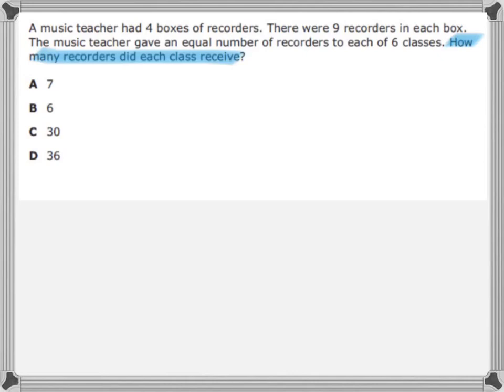So, he had four boxes of recorders, and there were nine recorders in each box, and he gave an equal number to six classes. Alright, let's come up with a plan now to solve this problem.